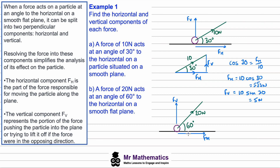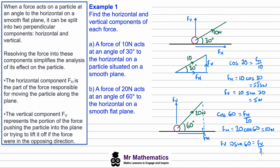Welcome back. We'll begin by working out the horizontal component, which is the adjacent side of a right angle triangle. So FH: cos 60 = FH / 20, giving a horizontal component of 20 cos 60, which equals 10 newtons. The vertical component FV is the opposite side, so we use sine: sin 60 = FV / 20, giving FV = 20 sin 60, which is 10√3 newtons.